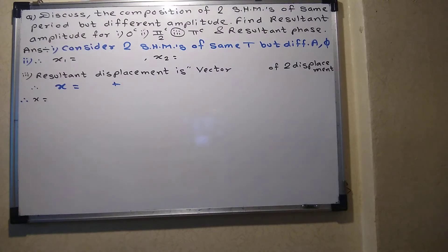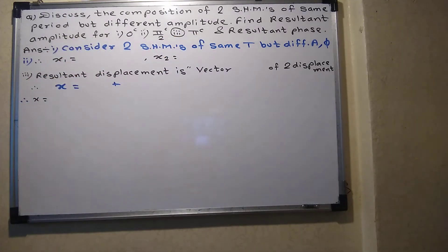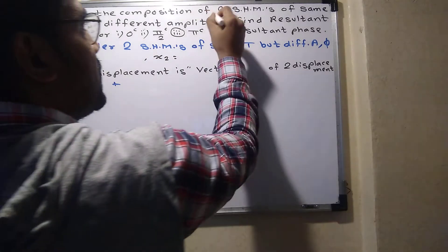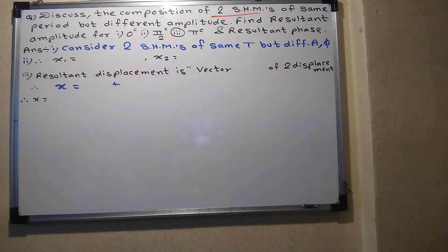This is the next question from the chapter on oscillations. The question is: discuss the composition of two SHMs. Composition means when two oscillations intersect, what will be the result — like in wave optics when two waves interfere and interference occurs. Here we are going to consider the resultant of two SHMs, i.e., the composition of two SHMs.